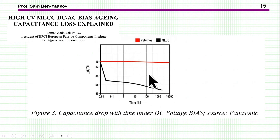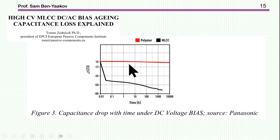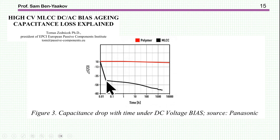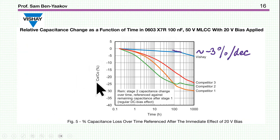But this is not really the end of the story. It turns out that DC bias also affects aging. From one paper, a Class II capacitor shows a very sharp drop in capacitance at the beginning on a semi-log time plot, then it changes more slowly and the slope changes further. There is very little information about this. Vishay has a document discussing this issue, attempting to show that their capacitor performs better.